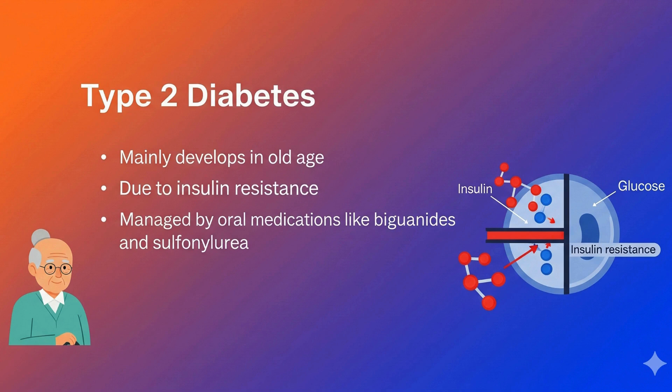Type 2 mainly develops in old age due to insulin resistance, and may be managed by other oral medications like biguanides and sulfonylurea.